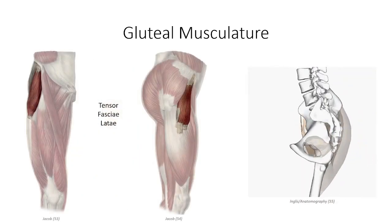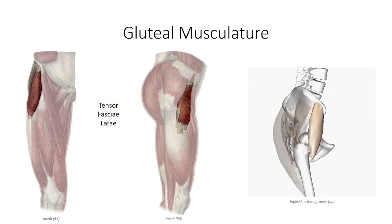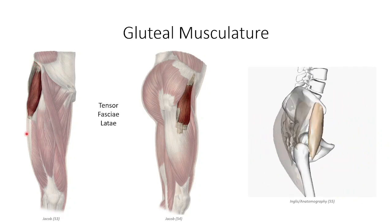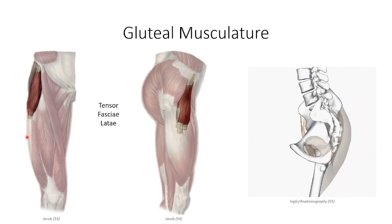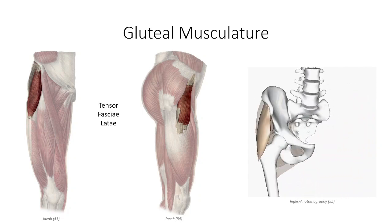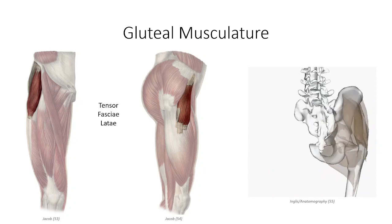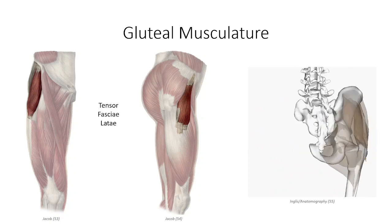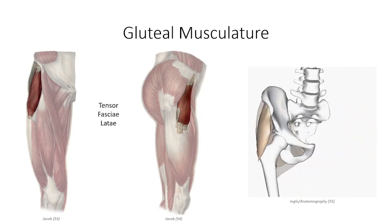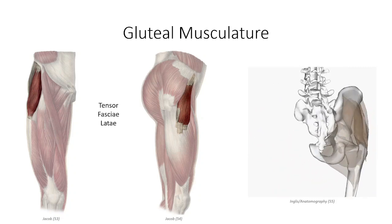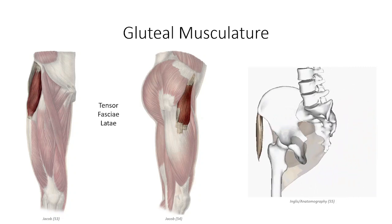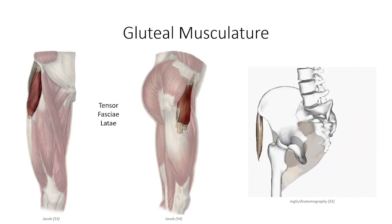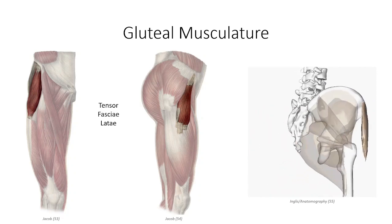An additional muscle to discuss is the tensor fasciae latae, a fusiform muscle originating off the iliac crest with a unique insertion. The inferior portion of the muscle tapers and the connective tissues blend with the fascia latae to form the iliotibial band. The fascia latae continues to the knee where it inserts in the anterolateral region of the tibia at Gerdy's tubercle. It contracts to tighten the fascia of the thigh and provides a mild contribution to hip flexion. Although oriented more with the anterior muscle group, it is supplied by the superior gluteal neurovascular bundle and is therefore considered part of the gluteal region.